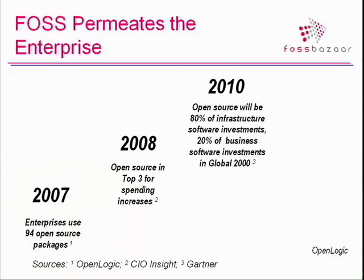Regardless, open source continues to march on and permeate organizations. According to Gartner, by 2010, open source will be in 80% of the infrastructure and 20% of the business software investments. The analyst firms' estimates have gotten relatively accurate as the trend built, and they haven't changed these numbers for a while — only small variations. It's pretty well understood that there is a trajectory of open source penetration into organizations, and it continues to grow.